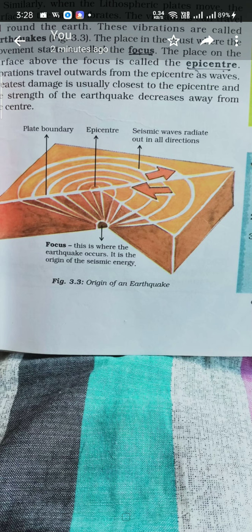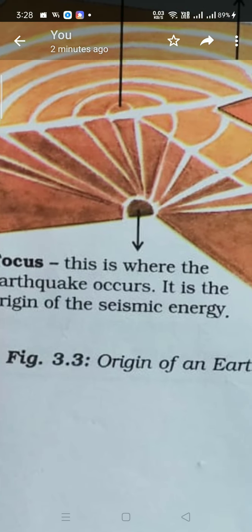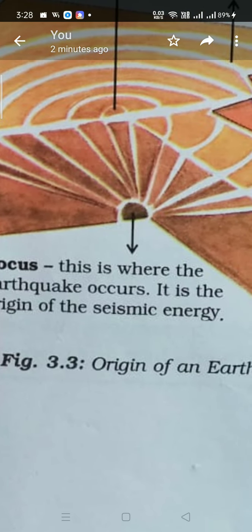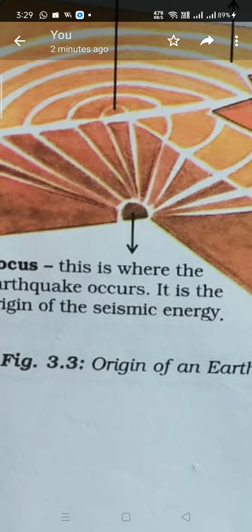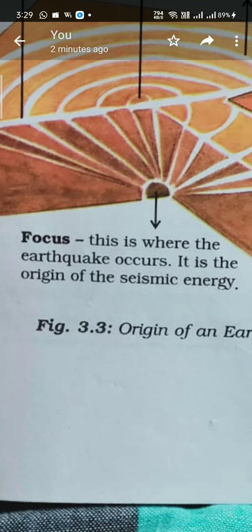Now, when an earthquake takes place, the place in the crust from where the force or movement started is called the focus. Can you see that circular part with the arrow? That is the focus point. Because of the force at that point, the plates moved and the vibrations took place.